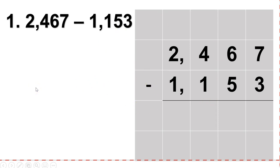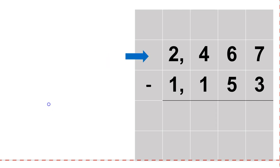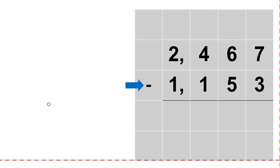So right now, if you have a paper or a whiteboard, write this problem down. When we subtract, the top number is called the minuend — that's the number we're going to start with. The number that we're subtracting is called the subtrahend. So right now, pause your video, try to solve this problem on your own, and then come and check your work by pushing play.